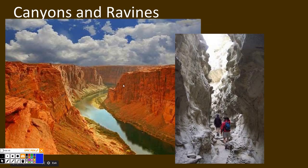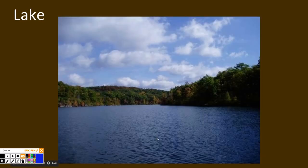Canyons form when a river runs through an area for millions of years, and it weathers and erodes the rock and grows deeper. Ravines are formed the same way, only smaller. A lake may grow if it continues to weather nearby land with its water, or shrink if sediment is eroded into the lake and fills it in.